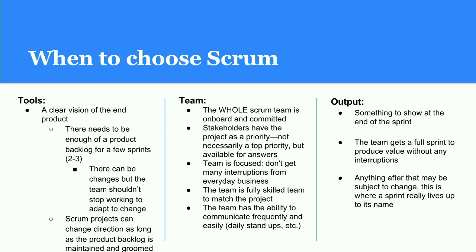Scrum projects can change direction as long as the product backlog is maintained and groomed. The team needs to be on board and committed. Stakeholders have to have the project as a priority — it doesn't have to be their top priority, but they need to be available to answer questions, give feedback, and enable the team to continue progressing in the right direction even after a change. The team obviously has to have the skill set to manage the project and remain communicative.